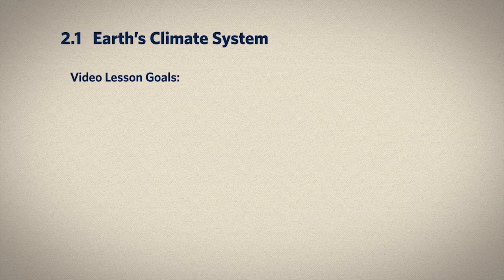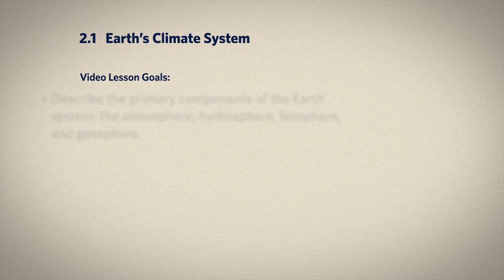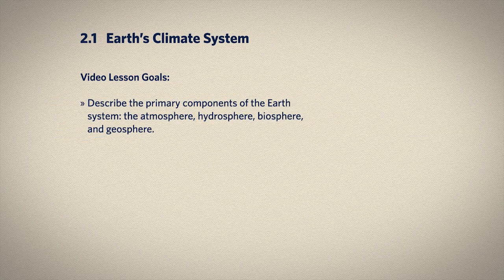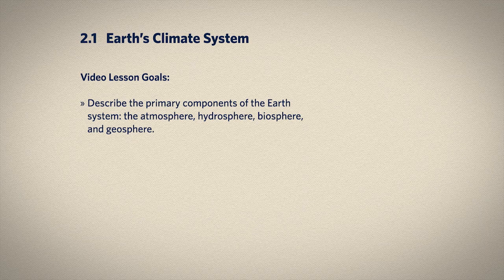Welcome to Module 2. In this lesson, we'll take a quick tour of the important pieces that make up Earth's climate system. By the time you complete this lesson, including the activities and questions, you should aim to be able to describe something about each of the major components in Earth's system: the atmosphere, the hydrosphere, the biosphere, and the geosphere.